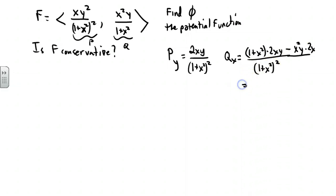Simplifying that, distributing across, what happens is we get 2xy plus 2x cubed y minus 2x cubed y, all over 1 plus x squared quantity squared.